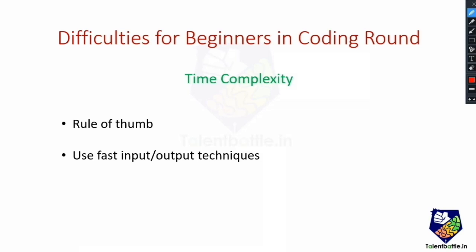The next tip is to use fast input/output techniques for printing and taking inputs. This is particularly important for object-oriented languages like Java or Python. In Java, using System.out.println or Scanner objects for input is relatively slow. Instead, using PrintWriter or BufferedReader for I/O is faster, and that can save you time which matters for staying within time limits.